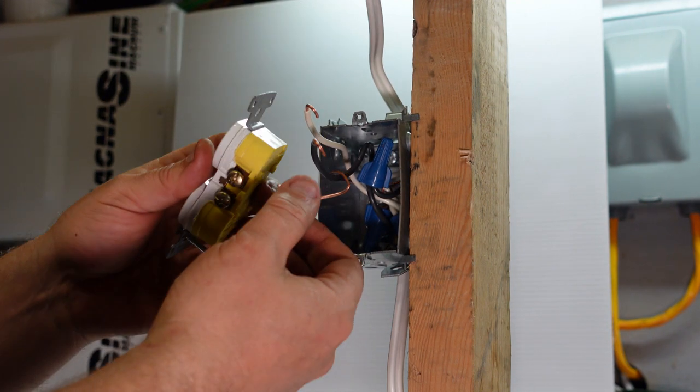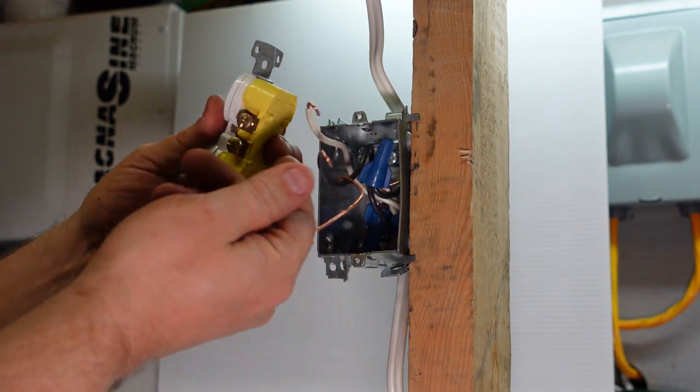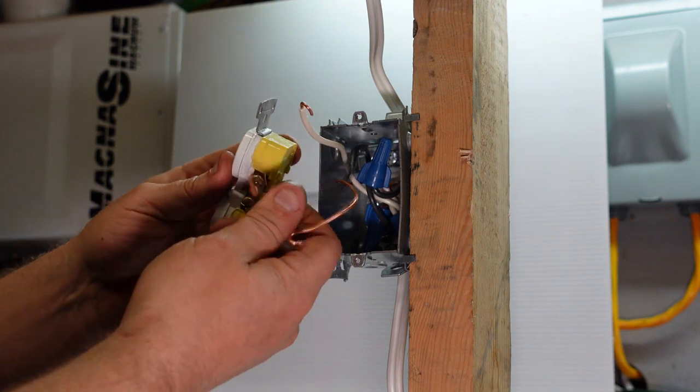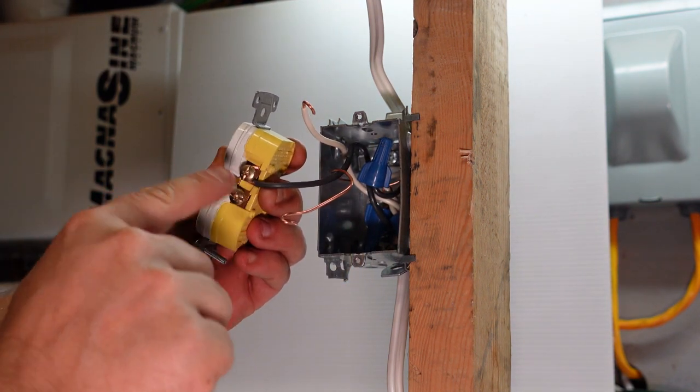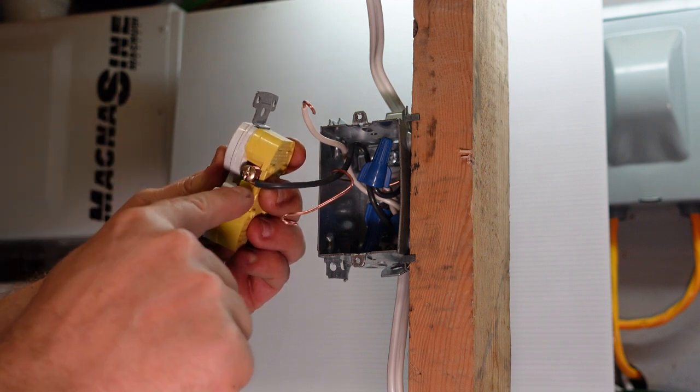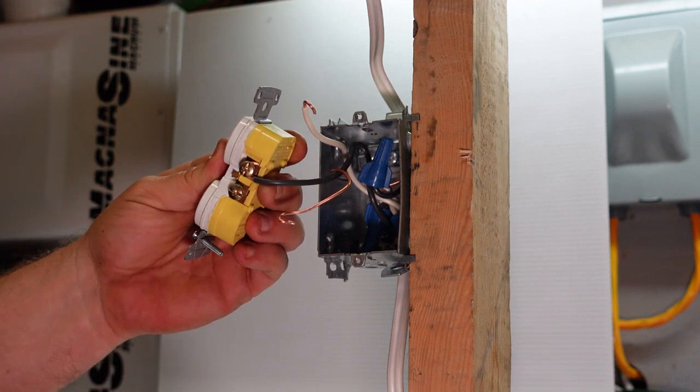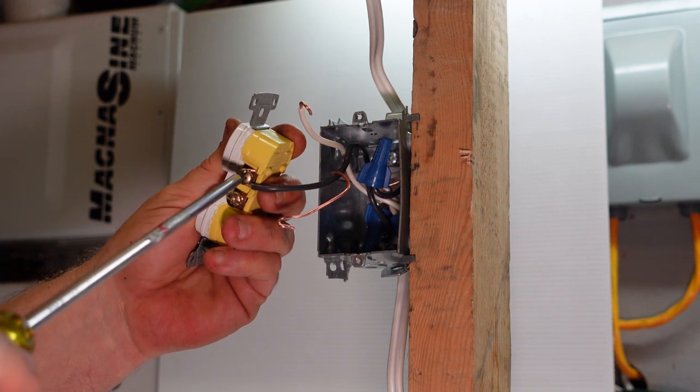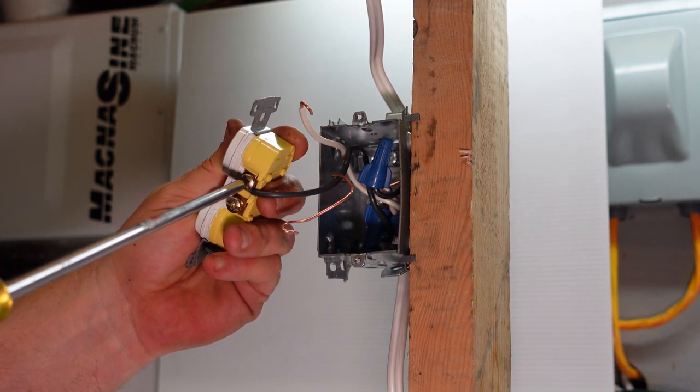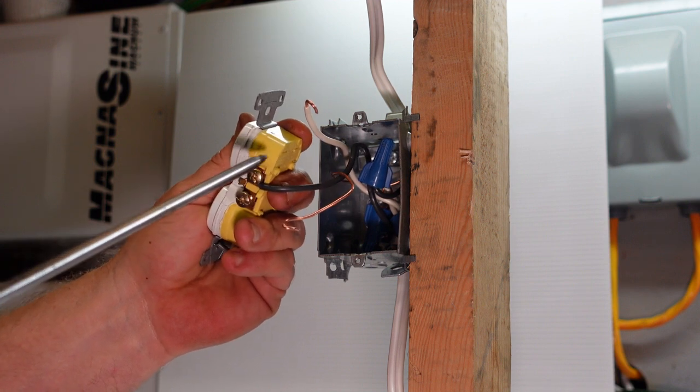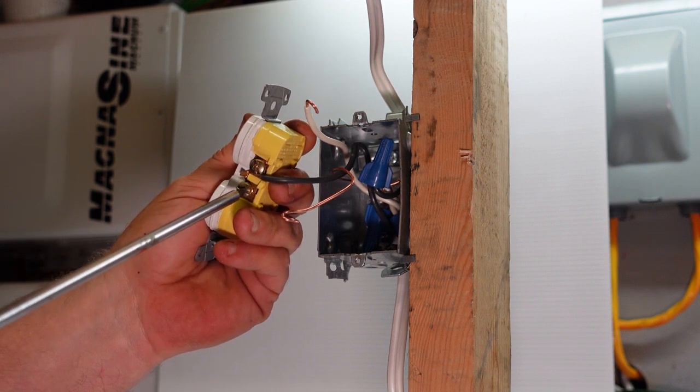Now the important part: when they go on the receptacle, the hook needs to face this way, not the opposite way. The reason for that is because when we tighten down these two screws, it pulls the wire into place. If we go the opposite way, it will tend to want to pull the wire off of the receptacle, and that is actually not a good connection.